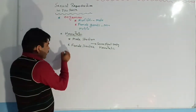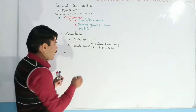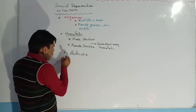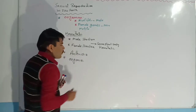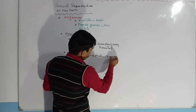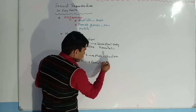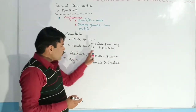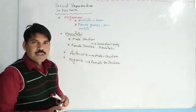If we talk about the sex organs of Vaucheria, the male structure is known as antheridia and the female sex organ is known as oogonia. So antheridia are male structures and oogonia are female sex structures, and both these structures are present on the same plant body or thallus.